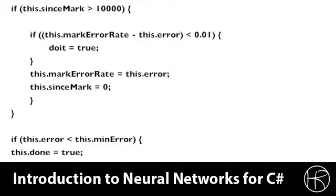If we continue through, then we set the error rate equal to the current error, and we reset the mark rate to zero because we've just sampled the error rate, so we don't need to do this again for 10,000 iterations.